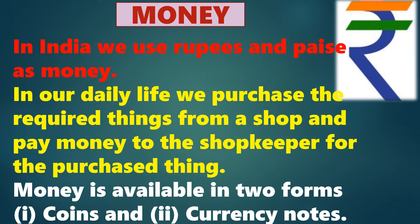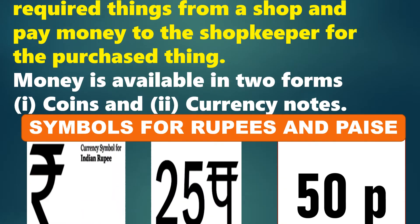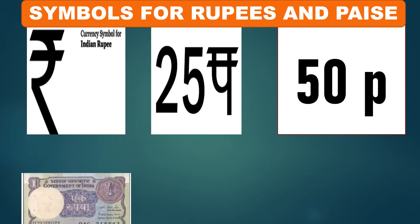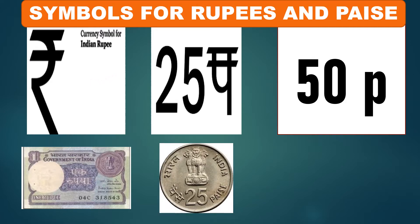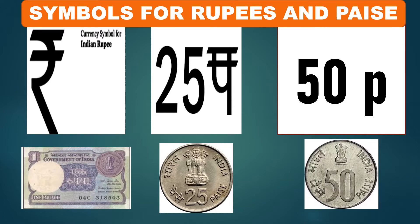Currency of a country is the type of money which is used in the country. In India, the symbol for the paper currency note has been taken from the 'Ra' akshar of Hindi. For denoting paise, we have taken the symbol from the 'Pa' akshar of Hindi. But while writing in English, we use small 'p' to denote paise.